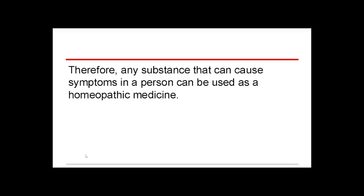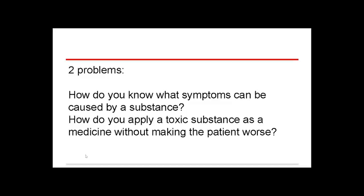Any substance that can cause symptoms in a person can be used as a homeopathic medicine. Two questions come up: first, how do you know in detail what symptoms can be caused by a substance? And second, how do you apply a toxic substance as a medicine without making the patient worse? Anything can be used — venoms, toxins, poisons — but you use them in a non-toxic way that I'll get to in a few minutes.